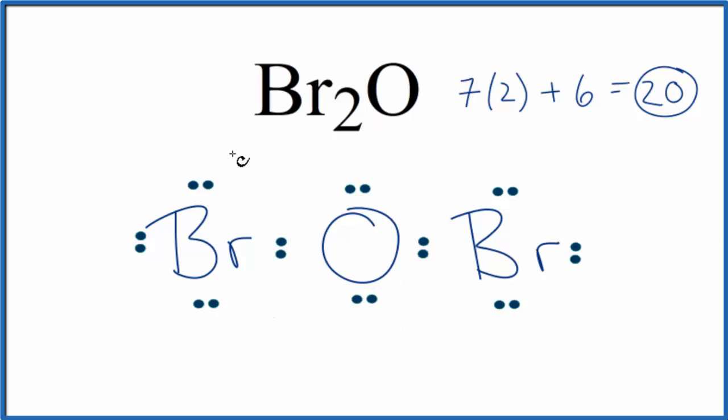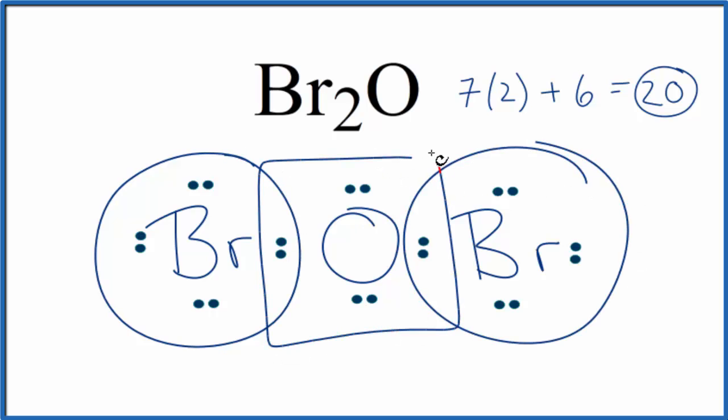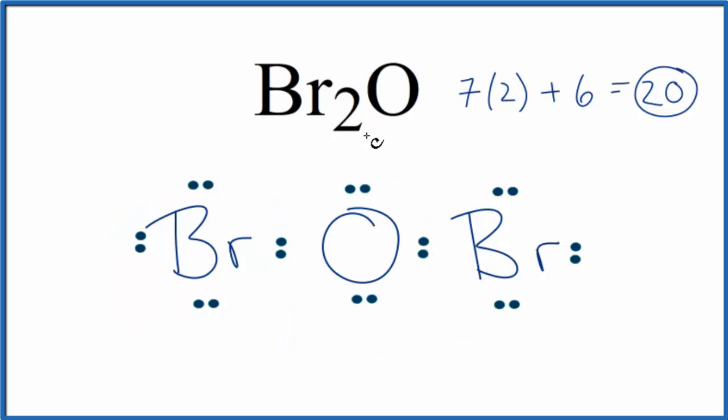So we've completed the octets. Each bromine has 8 valence electrons. This oxygen in the center, it has 8 valence electrons. So this is the Lewis structure for Br2O. If you check the formal charges, you would see this is the best Lewis structure. The formal charges for each element here, they will be 0. So that makes this the most likely or favorable Lewis structure for Br2O.